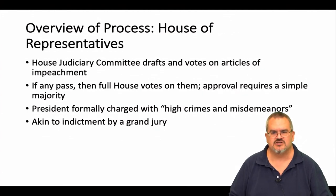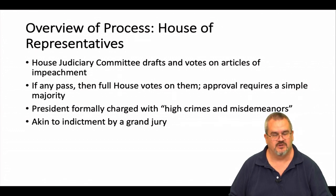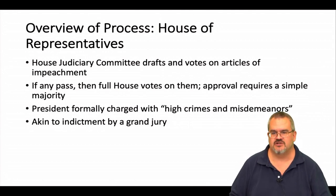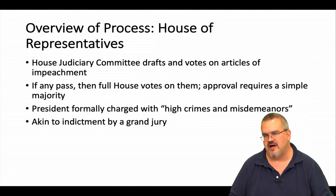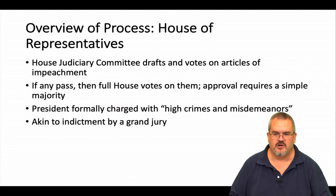So let's now look at the nuts and bolts of the process. It begins in the House of Representatives. The House Judiciary Committee drafts and then votes on articles of impeachment, if they choose to. If any of those articles of impeachment — which are formal accusations of presidential wrongdoing — pass the House Judiciary Committee, then they proceed to the full House. The full House votes on them and can approve them with a simple majority. If the House does vote by a simple majority to approve any or all articles of impeachment, that means that the president has formally been charged by the House with high crimes and misdemeanors. This is akin to indictment by a grand jury.